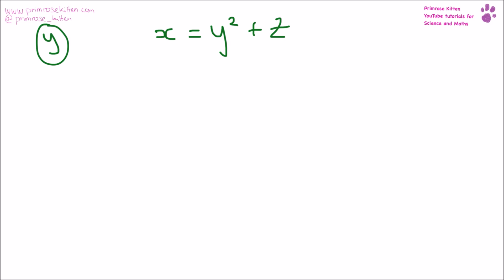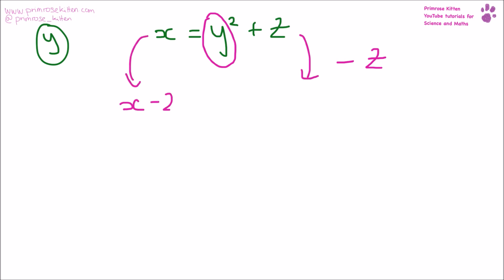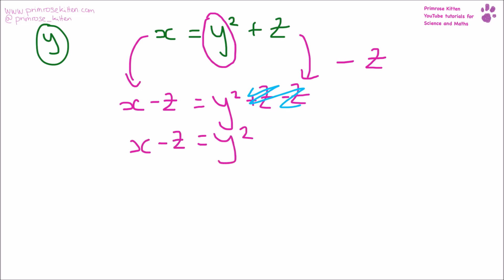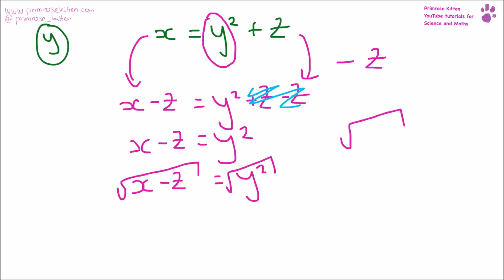x = y² + z, and it is y here that we want to get on its own. The first thing we need to do is minus z from each side, so we end up with x − z = y² + z − z. The plus z and the minus z cancel each other out, so we end up with x − z = y². Now because we have y squared but we want y on its own, what we need to do is square root everything. The square roots cancel each other out, so we end up with √(x − z) = y.